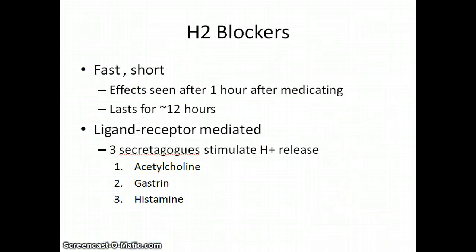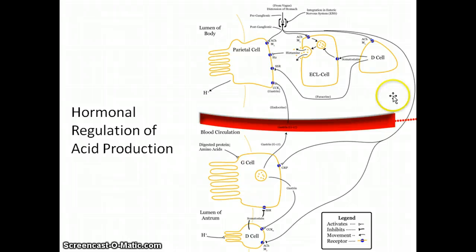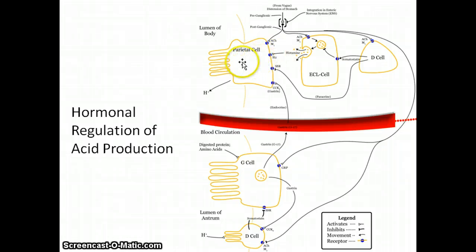The second way of minimizing acid production is by regulating the activity of the parietal cell. H2 blockers, or histamine blockers, act very quickly; however, the body does not retain them long. There are three secretagogues that stimulate proton release in parietal cells: acetylcholine, gastrin, and histamine. The enterochromaffin-like cells, or ECLs, release histamine into the interstitial fluid between the ECL and parietal cells. Parietal cells have histamine receptors, which cause the cell to pump protons into the lumen when bound. Notice the strict chemical and vagal regulation of acid production.